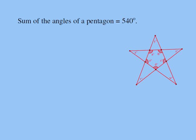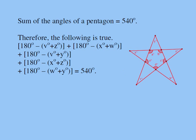This we know from our previous discussion. We concluded that 180 minus v plus z is a, 180 minus x plus w is b, so on and so forth. So a plus b plus c plus d plus e is 540, because they are the five angles of my pentagon. Now, basic algebra from here.